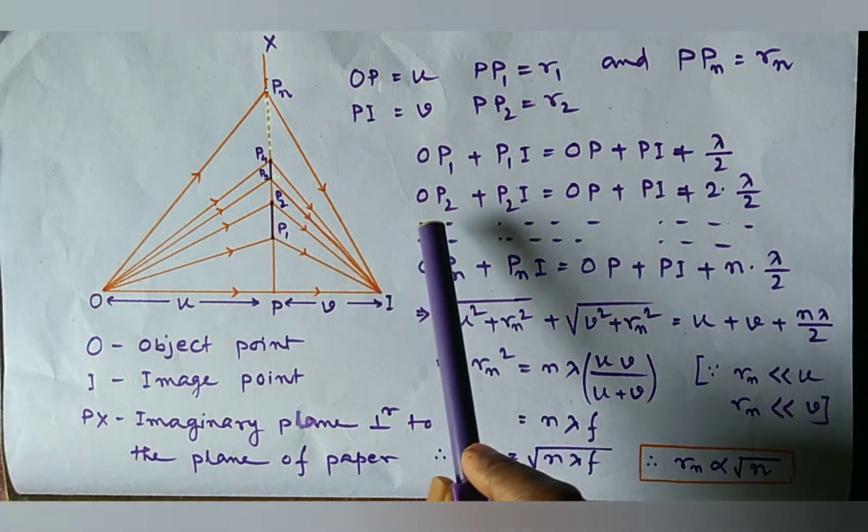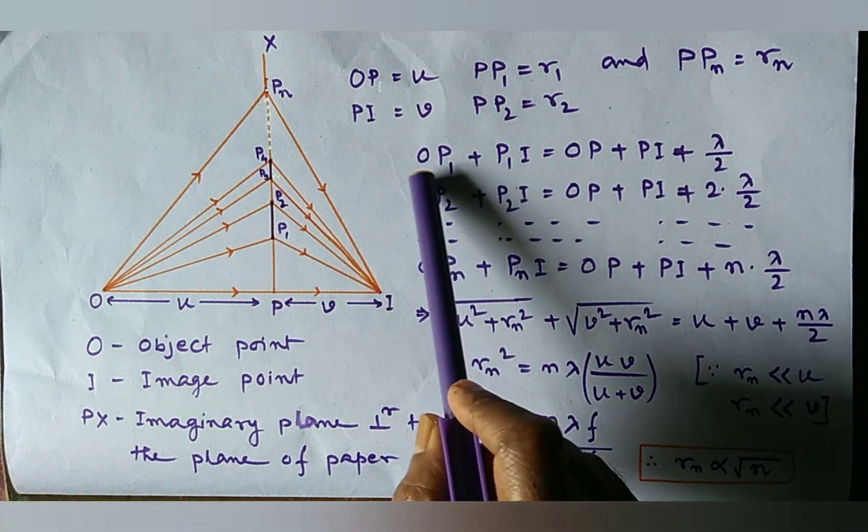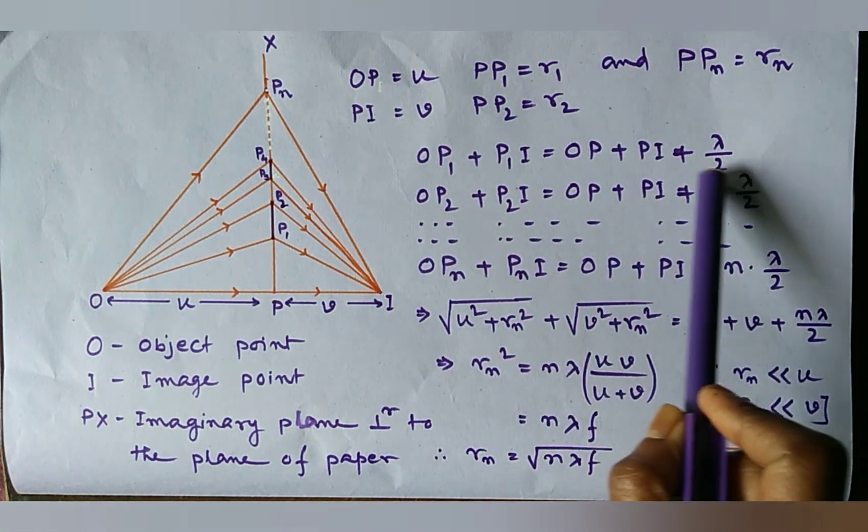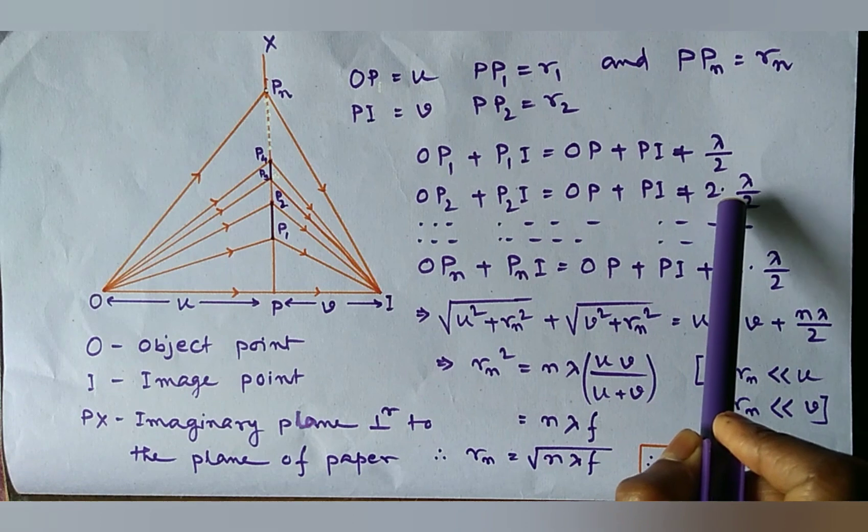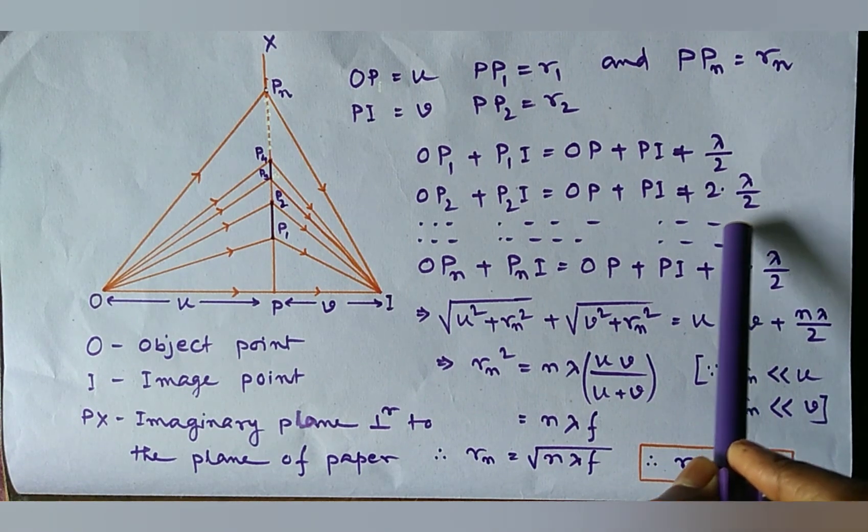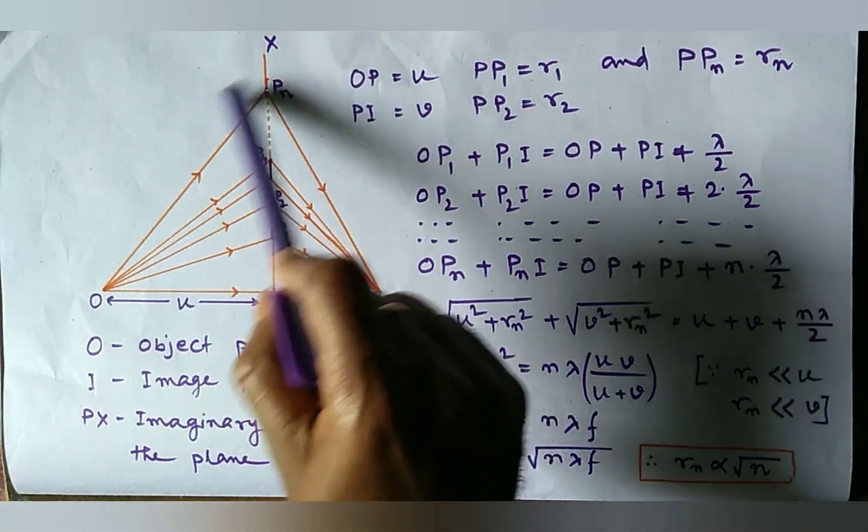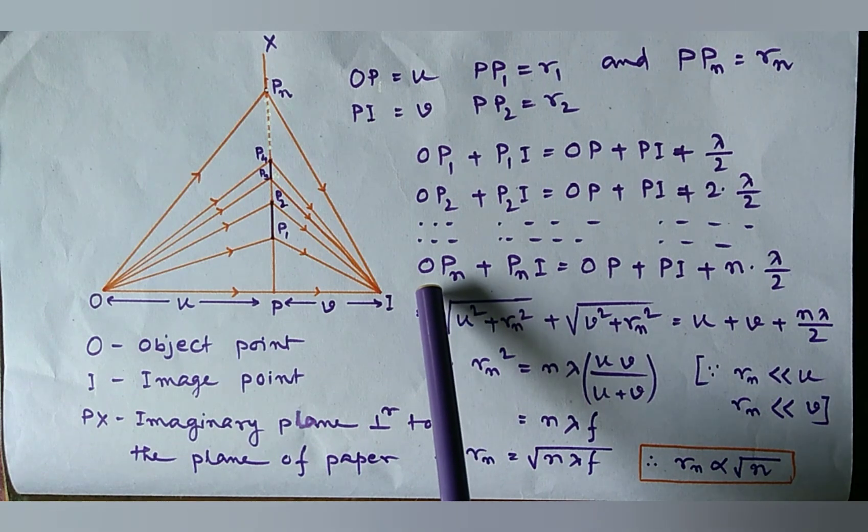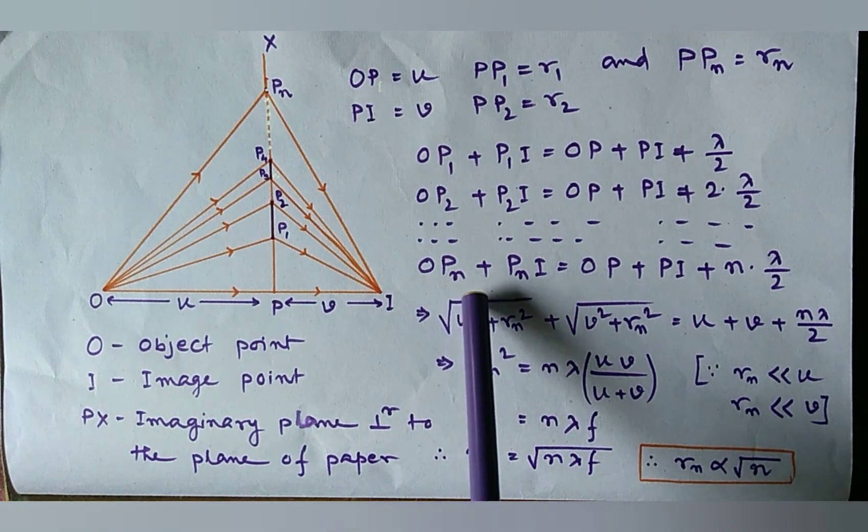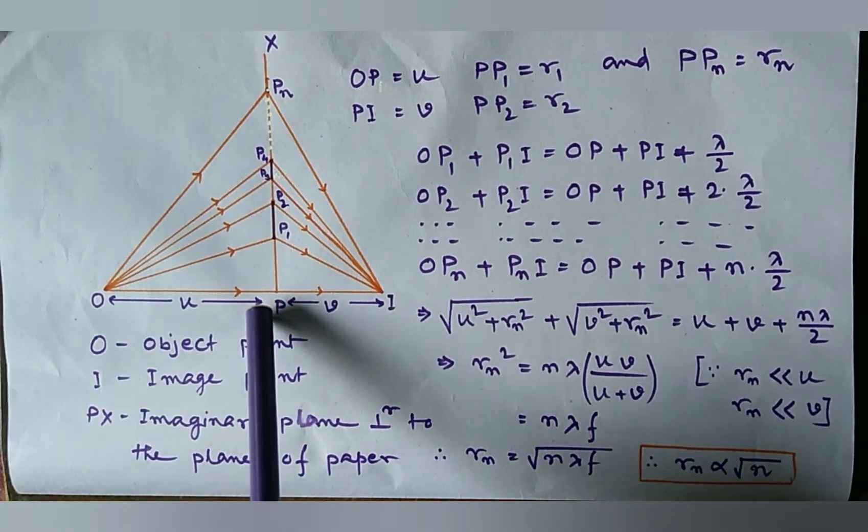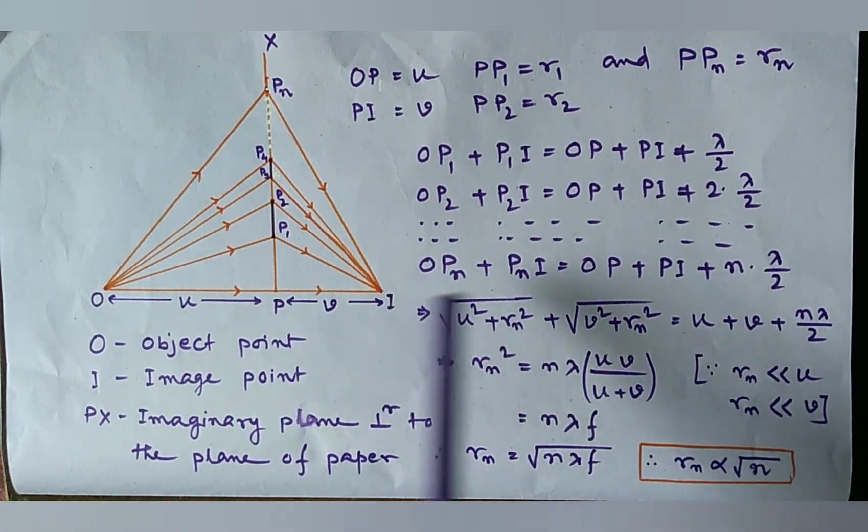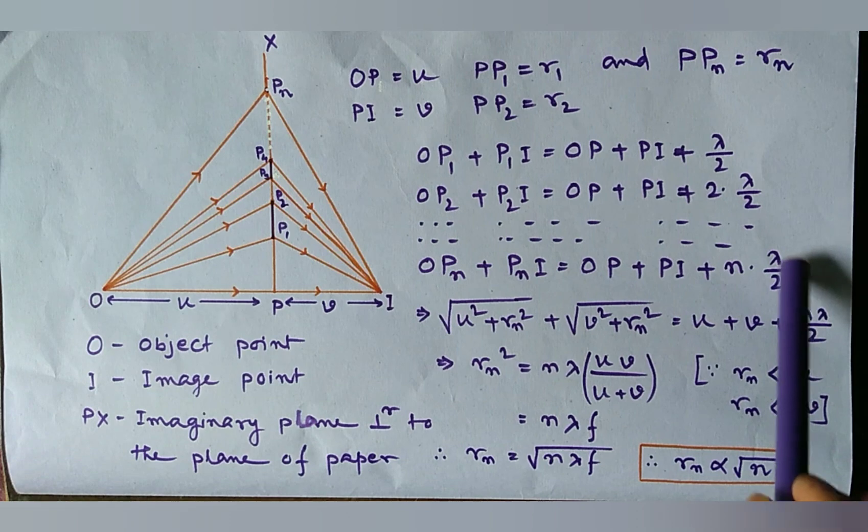That means each path further away from the previous by the length lambda by 2. So, the next one is this form, here we add 2 into lambda by 2 and for nth point we may write OPn plus PnI equal to OP plus PI plus N into lambda by 2.